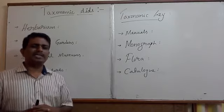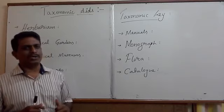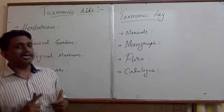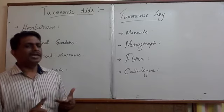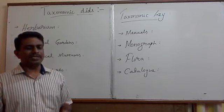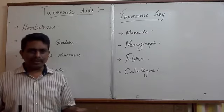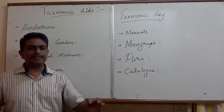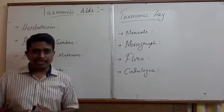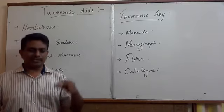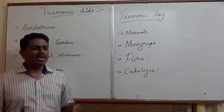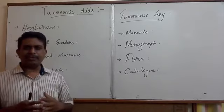Some of the universally accepted systems of classification are Bentham and Hooker's system, Engler and Prentice's system, and Hutchinson's system of classification. In the majority of herbariums, the Bentham and Hooker system, popularly designated as the natural system of classification, is taken into consideration for the systematic arrangement of herbarium sheets.